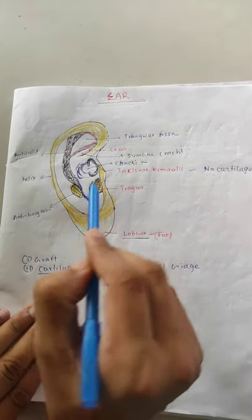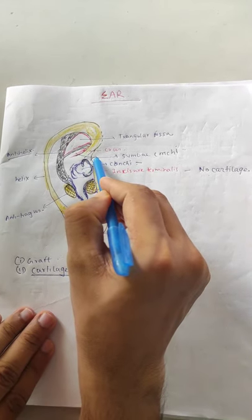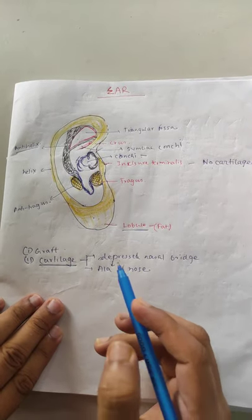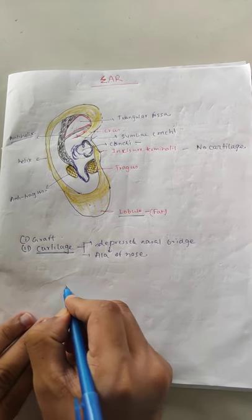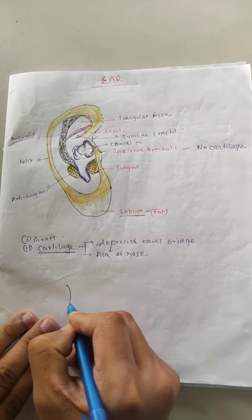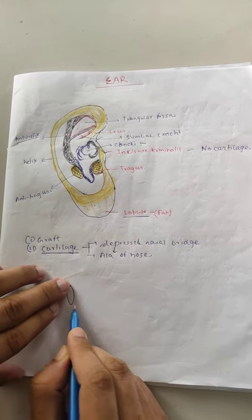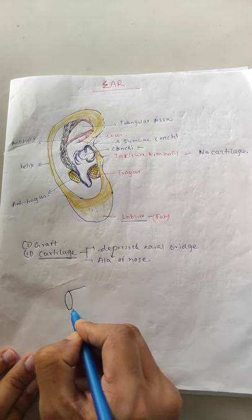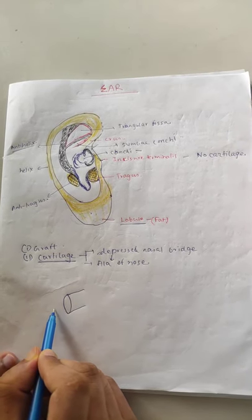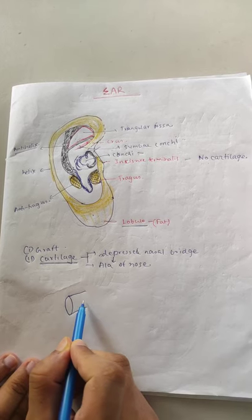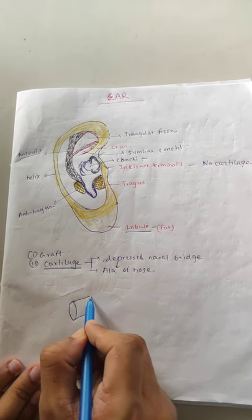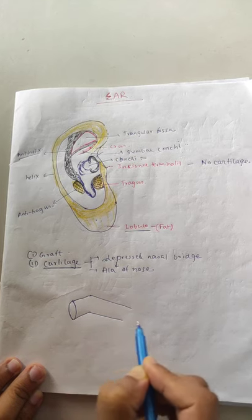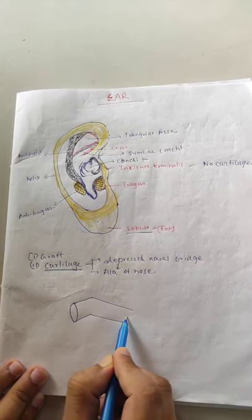The external auditory meatus has two parts. The outer part is directed upward, backward, and medially. The inner part is directed downward, forward, and medially.